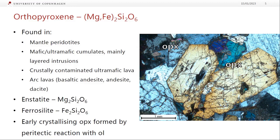Orthopyroxene is very similar to olivine, but it's got more silicon compared to magnesium and iron. It's also found in mantle peridotites and in mafic and ultramafic cumulates — mainly in layered intrusions. Places like Bushveld have lots of orthopyroxene, because you get lots of orthopyroxene crystallizing in crustally contaminated ultramafic lava because it's got higher silica. If you can get the silica up through crustal contamination and still have plenty of magnesium and iron, you can get orthopyroxene. It's also found in arc lavas, but there it tends to be later crystallizing — in basaltic andesites to dacites, orthopyroxene crystallizes after plagioclase and clinopyroxene, whereas in crustally contaminated ultramafic rocks it crystallizes after olivine and before plagioclase.